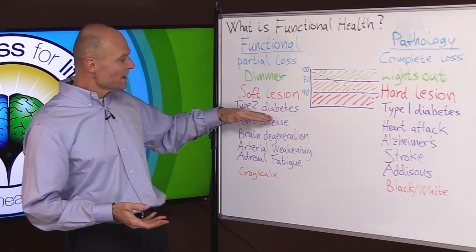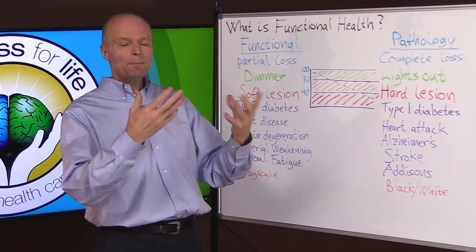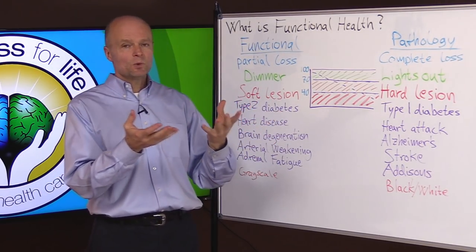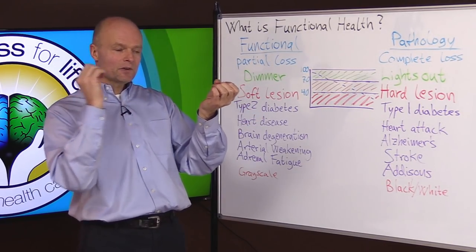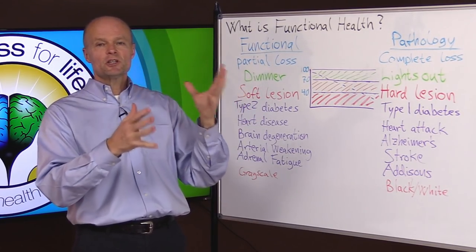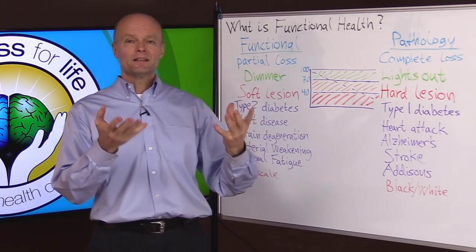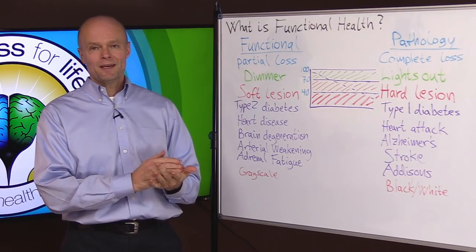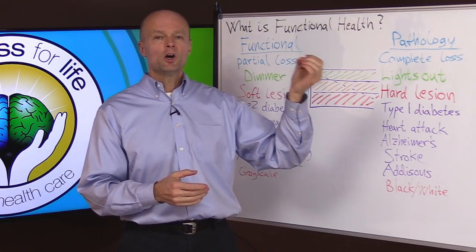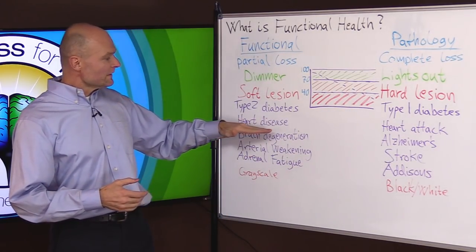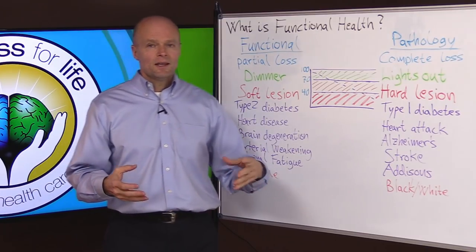A functional lesion would be like type 2 diabetes — the body can still make insulin, but it can't keep up because the body has been so abused and out of balance that even though the pancreas can still make some insulin, it's just not keeping up. Type 1 diabetes would be when the pancreas has lost the function to make insulin entirely — that would be a hard lesion; the cells are gone.